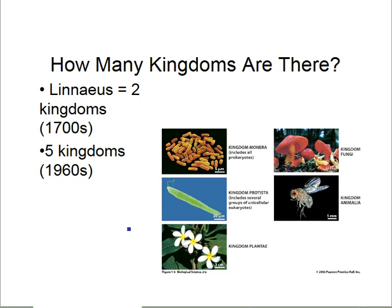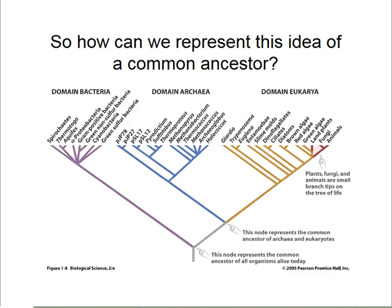We're continuing with part two of the intro to biology lecture, talking about the tree of life. This is an extension of the discussion that all cells on planet Earth are derived from a single cell that arose about three and a half billion years ago. All organisms since that time share that single cell as a common ancestor. If we look at a representation of the tree of life, we can divide out different types of organisms based on their properties.